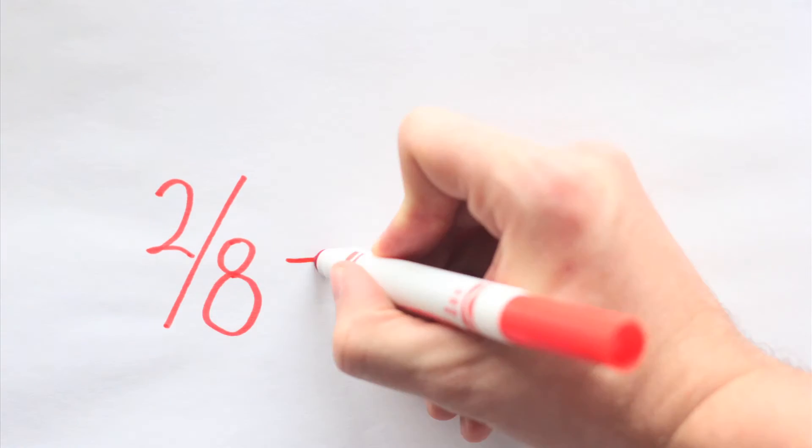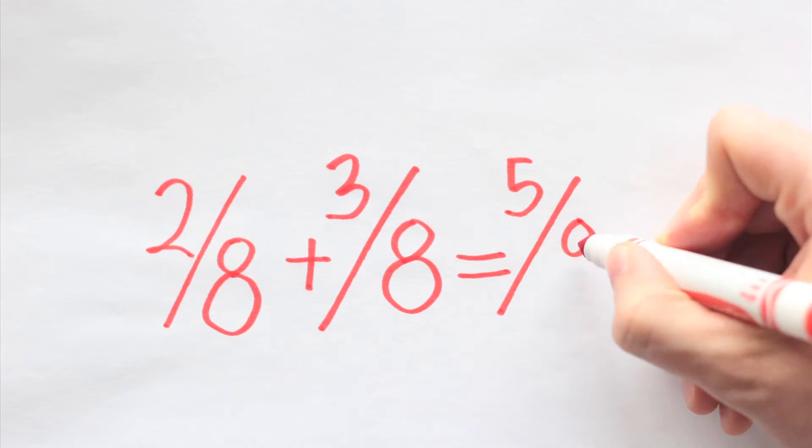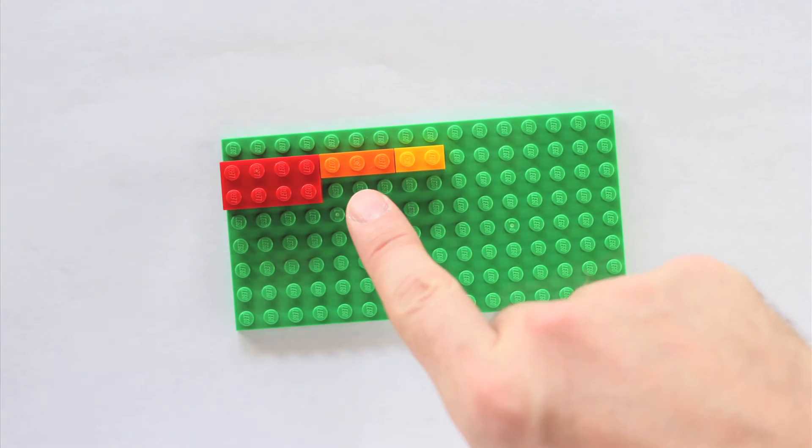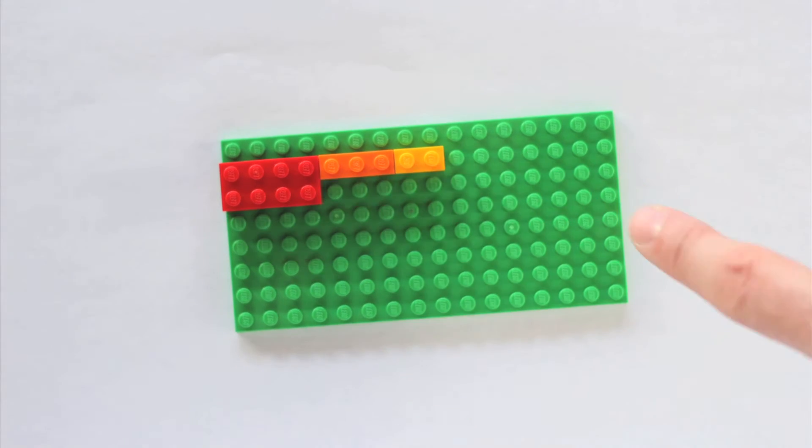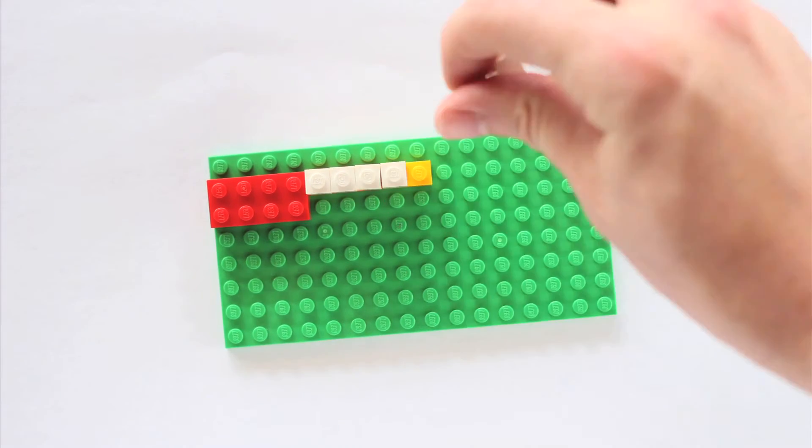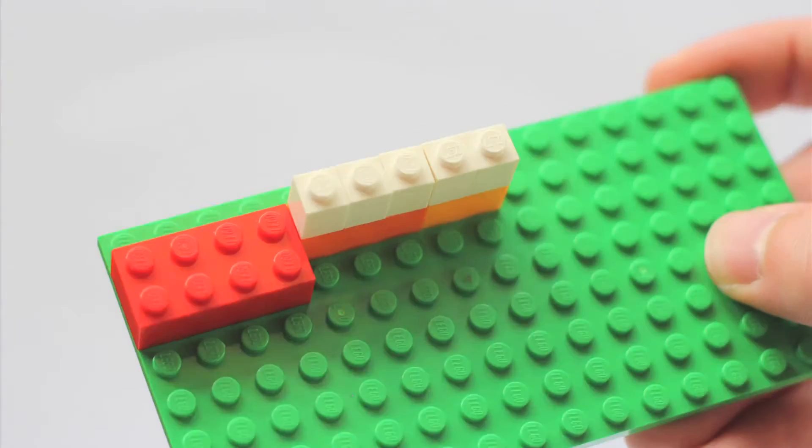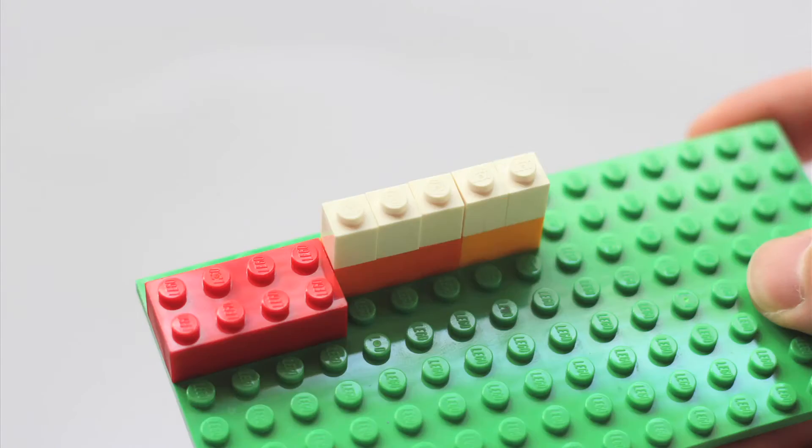To model the solution to the problem 2 eighths plus 3 eighths equals 5 eighths, move the bricks over from your model. Place a 1x1 brick on top of each stud on top of the 1x3 and 1x2 bricks to show that 5 1x1 bricks are equivalent to the 1x3 and 1x2 bricks when they're added together.